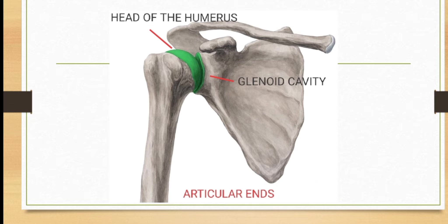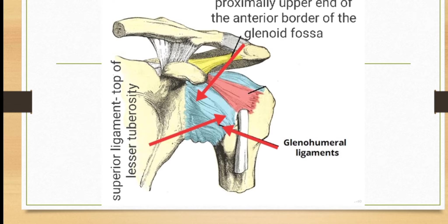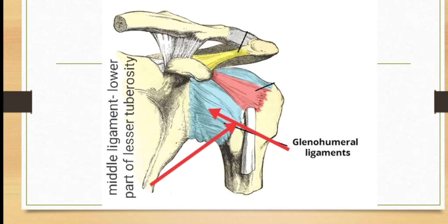The head of the humerus is hemispherical in shape and is covered with hyaline articular cartilage. Regarding ligaments, the first one is the capsule. The capsule is a loose fibrous sac-like structure that covers the joint, and the inner surface is lined by the synovial membrane. The capsule is proximally attached to the margins of the glenoid fossa and distally attached to the anatomical neck of the humerus.